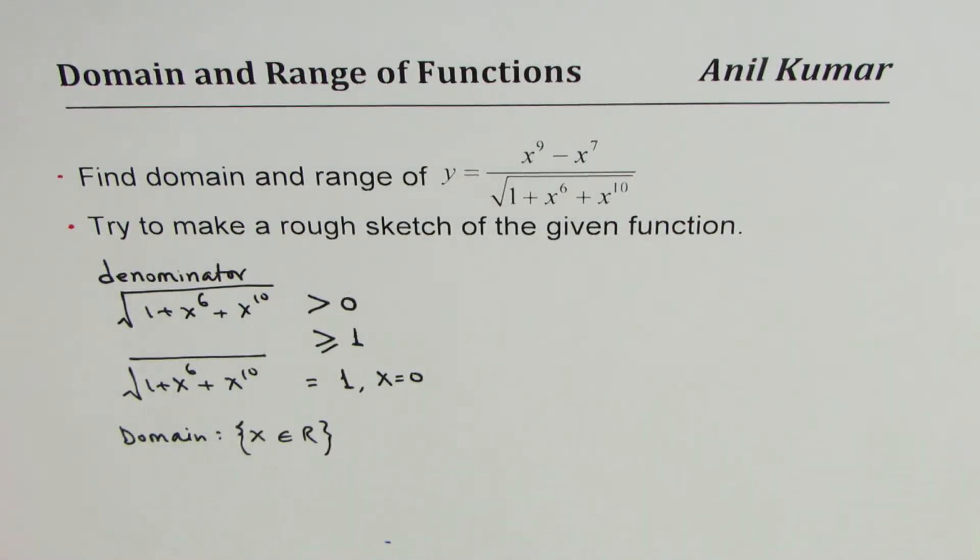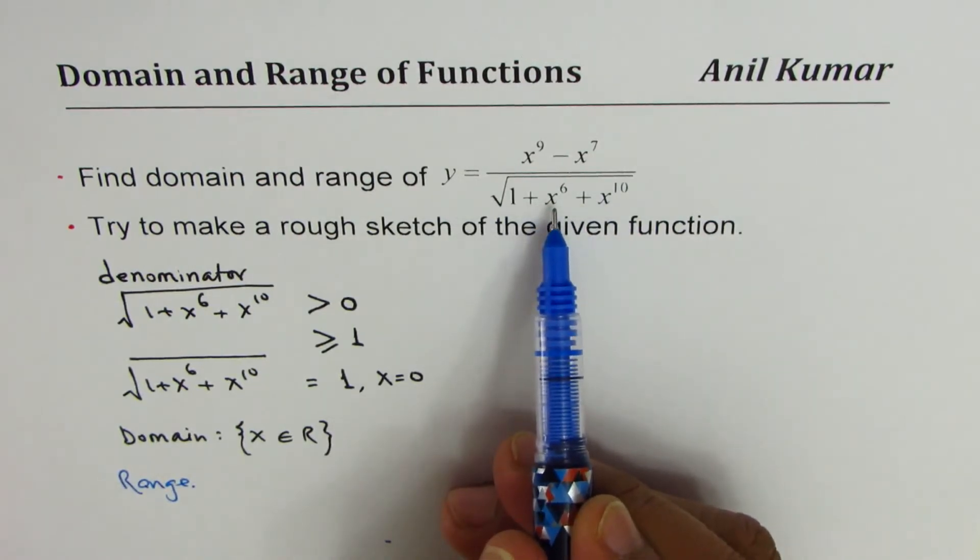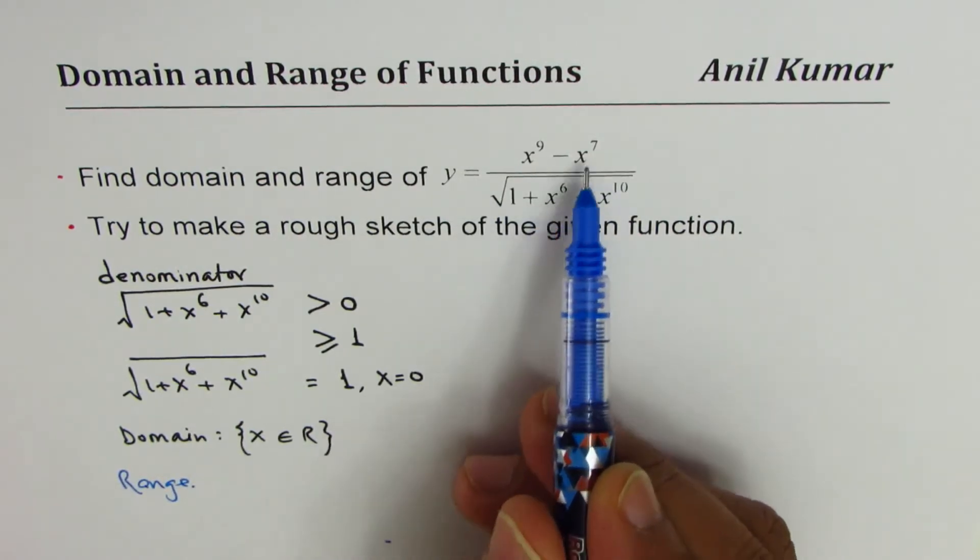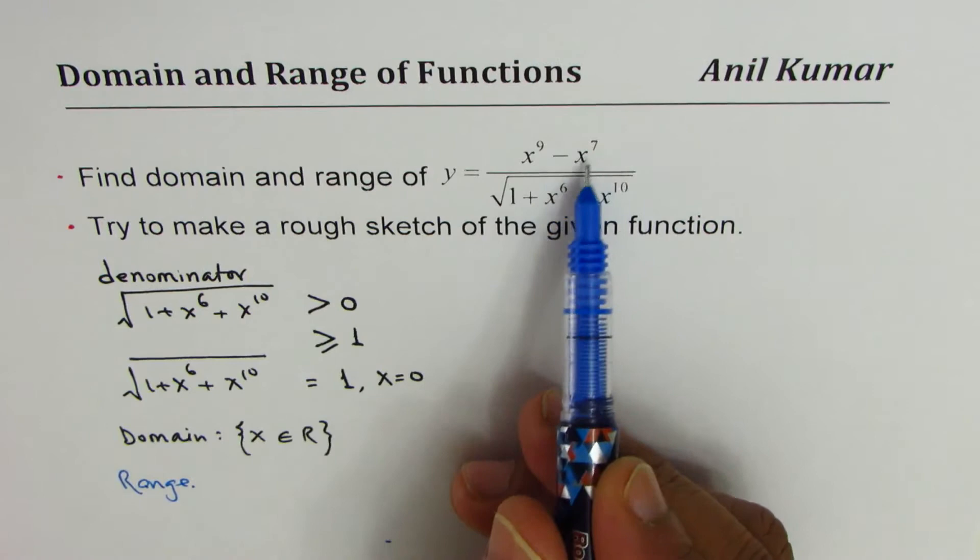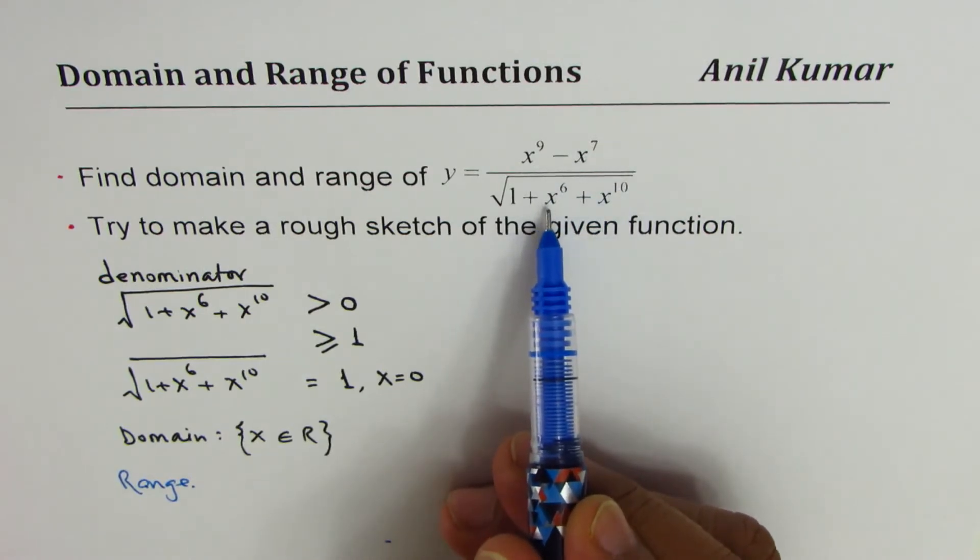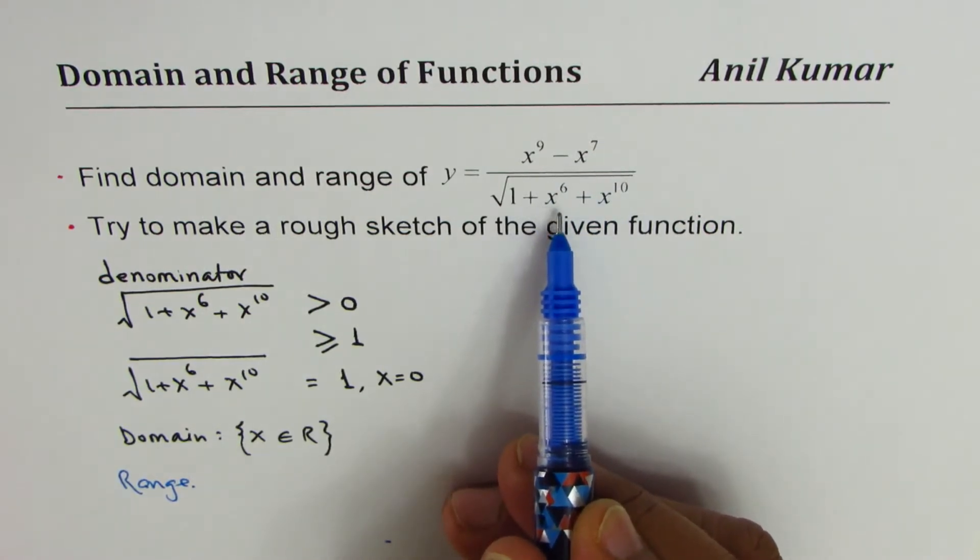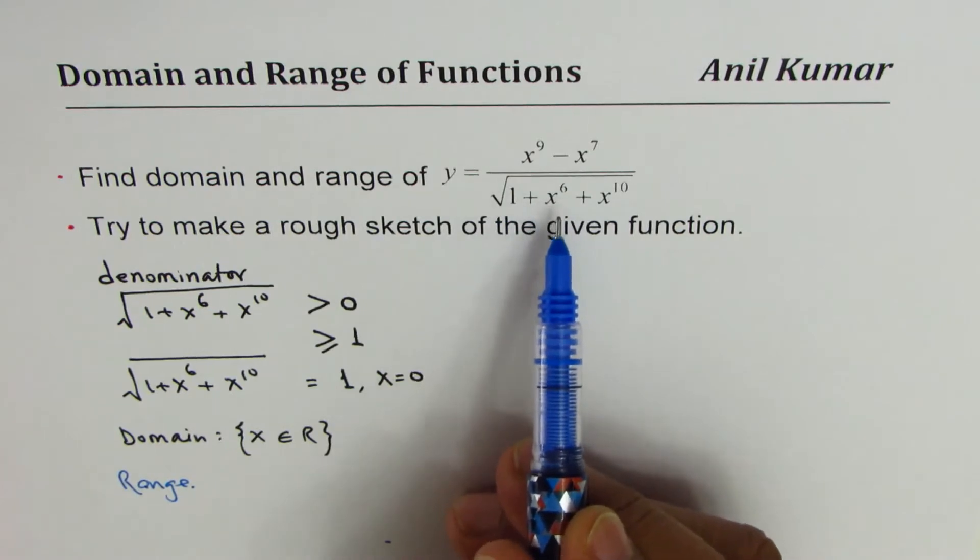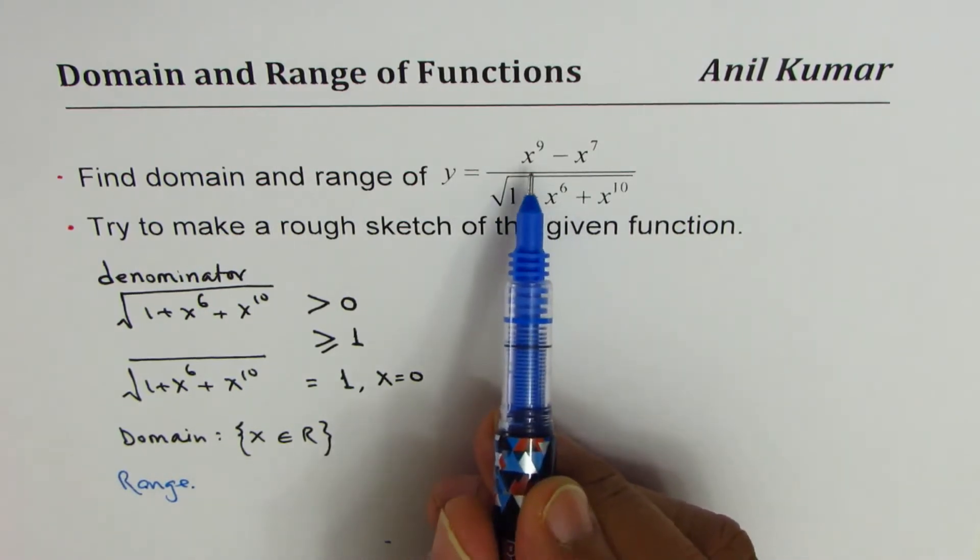Now how do we find the range? Think about range. We know that the denominator is always positive. For large values of x, denominator is going to be large but smaller than, much much smaller than, the numerator.